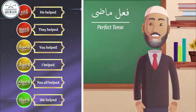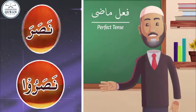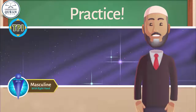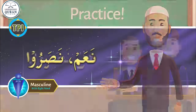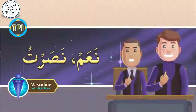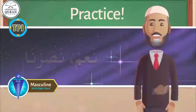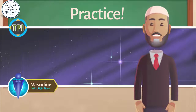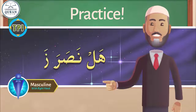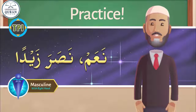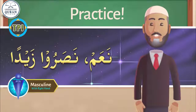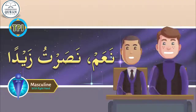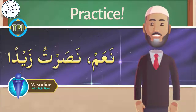Masha Allah. Can you repeat with me? Now let us use these forms in spoken Arabic. Let's say everyone has helped — so can you answer me? Now we will add an object. Did he help Zaid? Can you answer me in Arabic? Yes, he helped Zaid. Yes, they helped Zaid. Did you help Zaid? Yes, I helped Zaid.